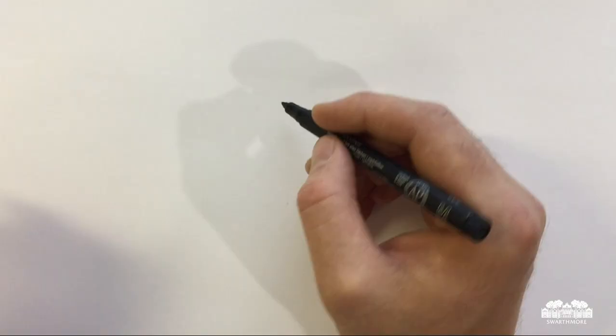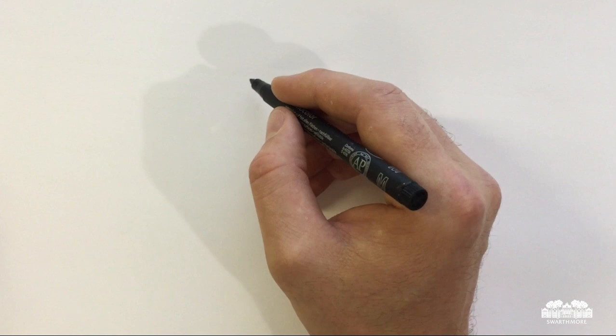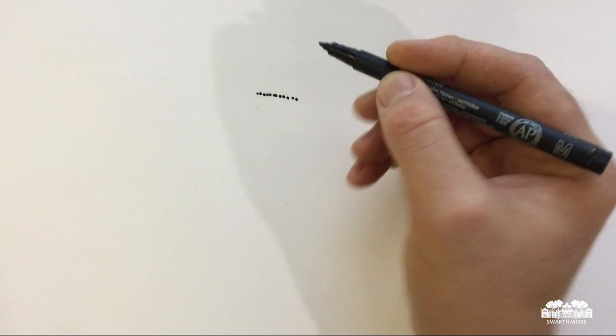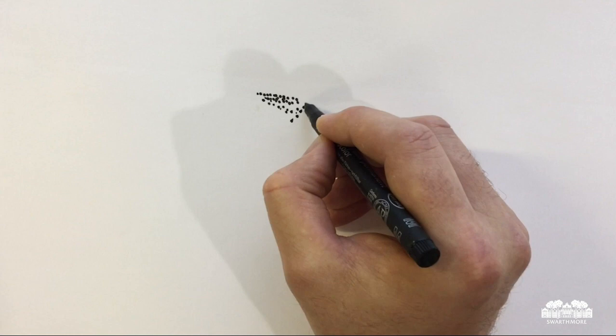So for our second drawing assignment, which is really going to target value, we're going to use dots. So let's take a wonderful tool to make lines, and let's only make dots. It sounds a little crazy. It's very slow. It can be tedious if you're not in the right mindset. Try to focus on only using the point of your pen to create a matrix of dots that either loosens in order to create a lighter value using the white of the page, or darkens in order to control a darker value.